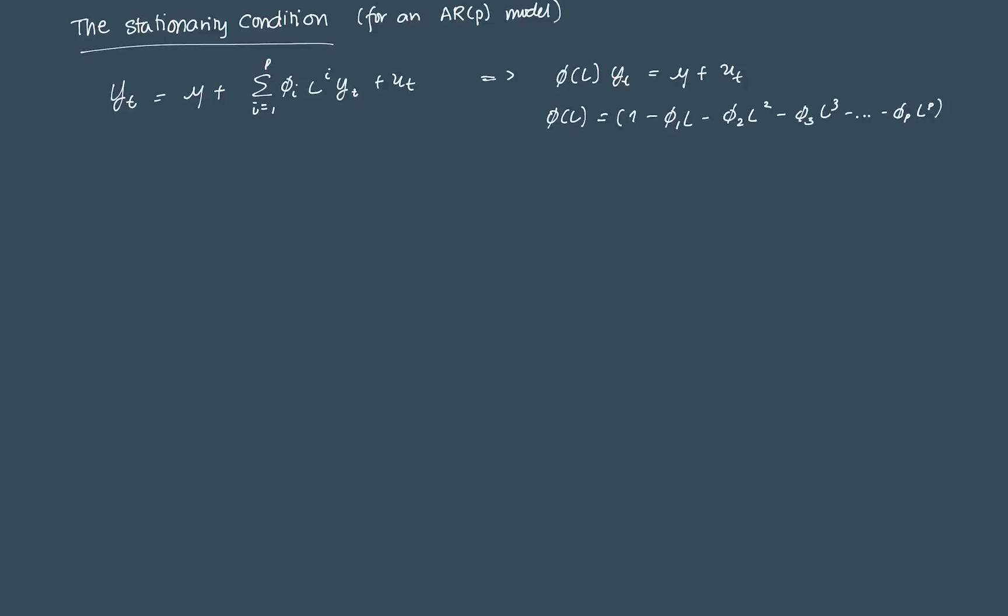To be able to test for stationarity, we generally check the roots of what we call the characteristic equation. To explain this, let's use this form of the AR model in lag operator notation.